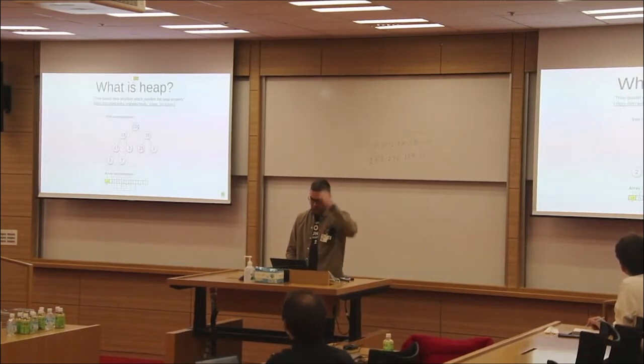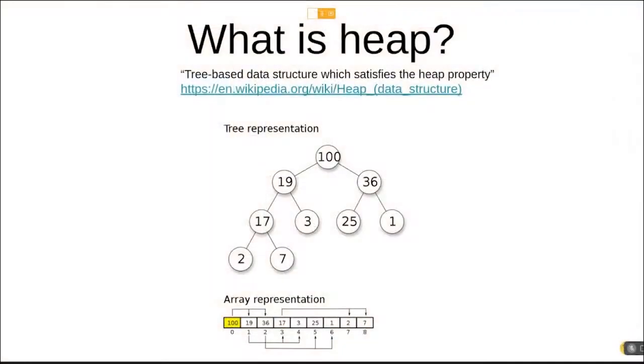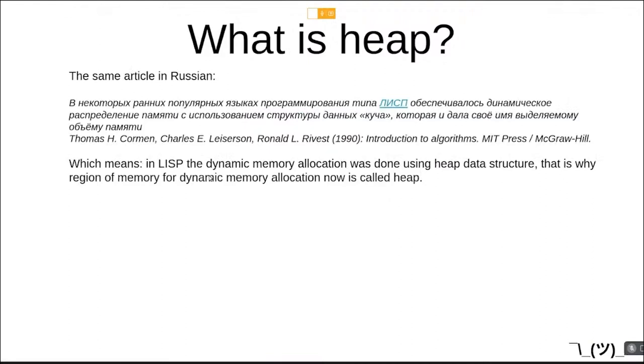Today we will learn how heap works in Linux systems in glibc, and we will look at it from Radare2. What is heap? You will be surprised, but heap is a data structure. From Wikipedia, heap is a tree-based structure which satisfies the heap property. From Russian Wikipedia of the same article, we get more details: in Lisp, dynamic memory allocation was done using the heap data structure. That is why the region of memory for dynamic memory allocation is now called heap — a little bit of history.